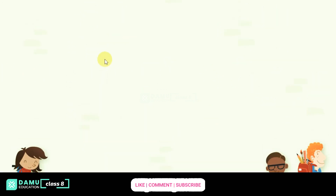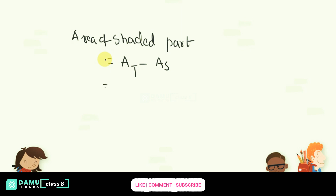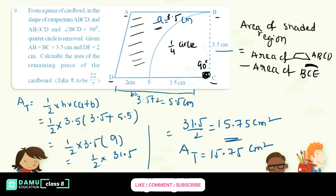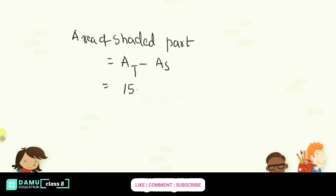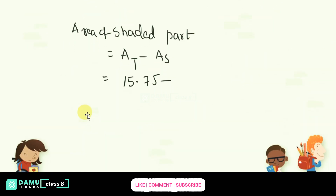The area of the shaded part equals area of trapezium minus area of sector: 15.75 minus 9.625 = 6.125 centimeters square. Thanks for watching, please subscribe.